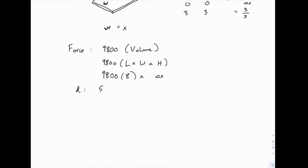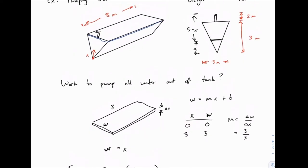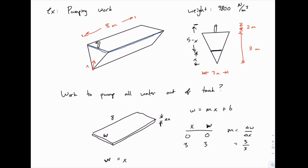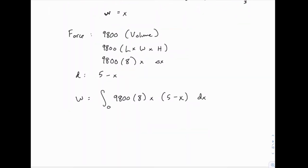So distance is just five minus x. And then for work, we will multiply these two and integrate. So work will be the integral of 9800 times eight times x, then we'll insert the five minus x for distance, keep the delta x at the end and call it dx now because we're integrating. And all we need is the limits of integration now. Those are pretty simple. The water starts when x equals zero, and the water finishes when x equals three, when you get to the top of that triangular tank. So the limits are from zero to three.